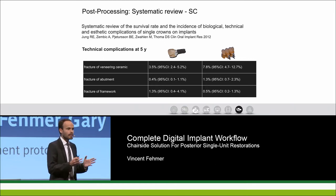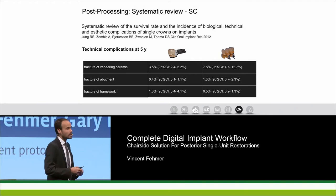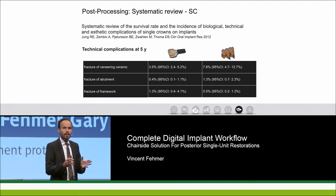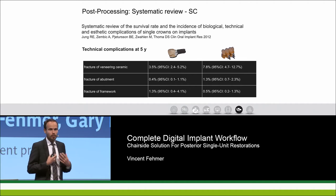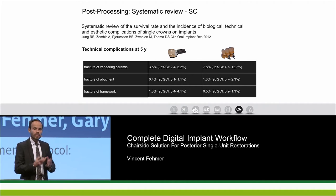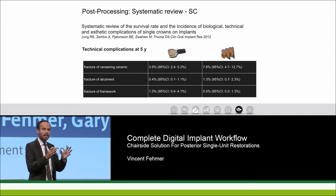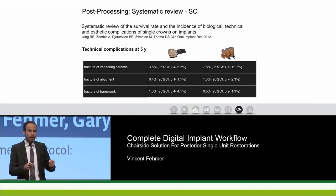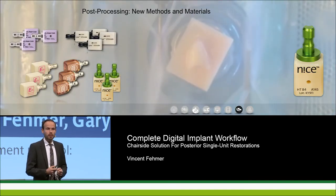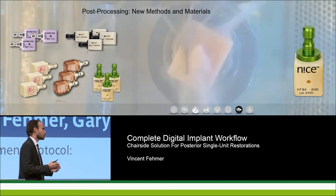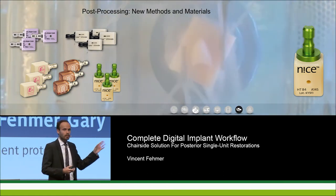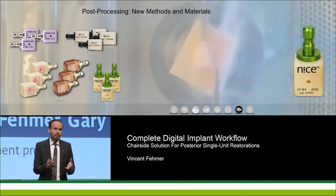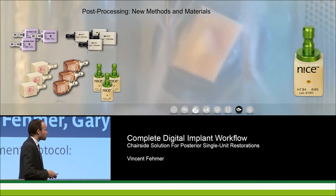The literature shows that industry support in terms of abutments and frameworks works perfectly fine — the weak link is the veneering ceramic applied by lab technicians, which has a high incidence of chipping. Monolithic reconstructions that are preformed by the industry can really help, since they are scaled down from a blank produced in a controlled manner. Here's an outlook showing how these reconstructions look: superficially stained and glazed, especially in the posterior zone, they look absolutely beautiful.